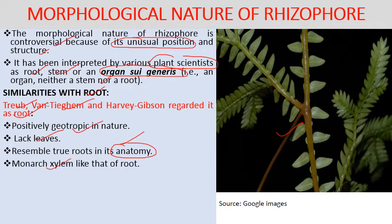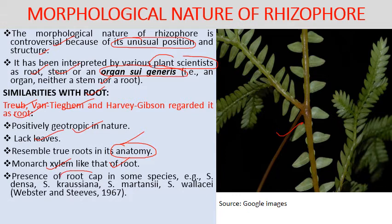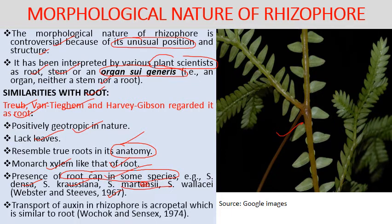Additionally, in some species root cap is present in the rhizophore. The transport of auxin in the rhizophore is acropetal — similar to that of a root — supporting the root-like nature of the rhizophore. This view was supported by Wochok and Sussek in 1974.